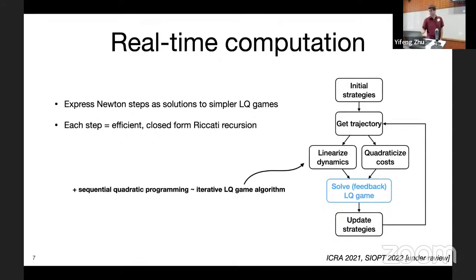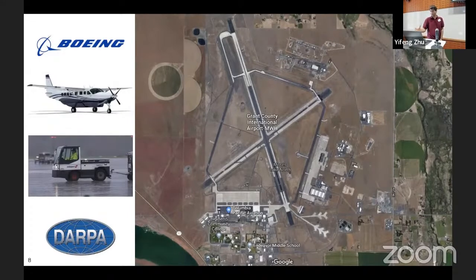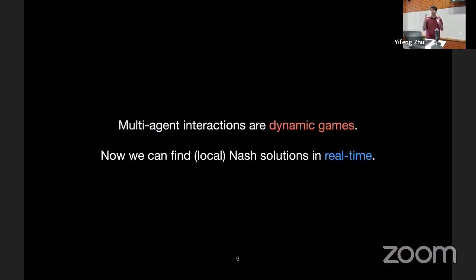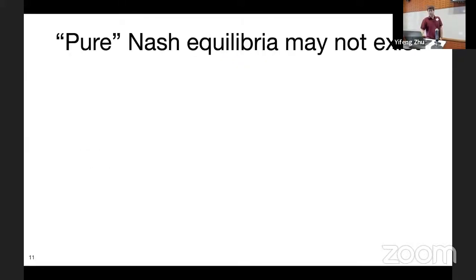We've shown these are efficient real-time algorithms and tested them at scale — on Boeing test aircraft, for example. This is pretty much the state of the art in solving mathematical games of this variety. Now that we have these techniques for solving games in real time, this opens up a huge range of opportunities to study the interactions of non-cooperative agents in real life.